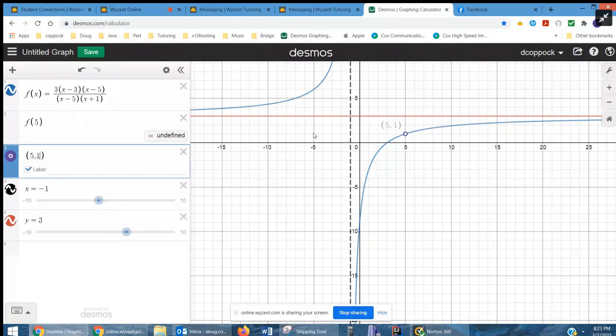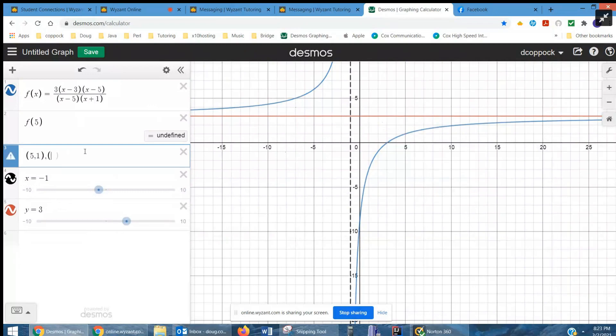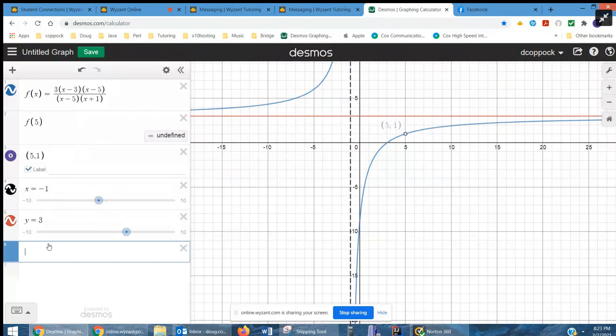The final condition is that when x is 0, y is negative 9. And if we put 0 in for x, we do get negative 9. So there's no adjustments to be made right there. I don't want a hole in that one. So we'll just put 0, negative 9 down here.